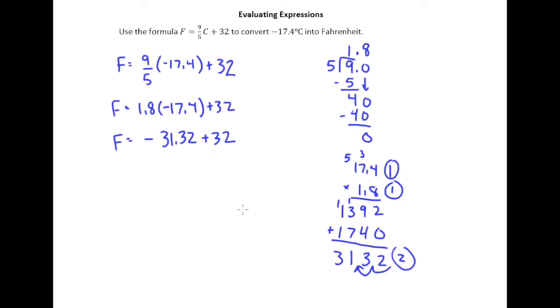And so now we know we just need to subtract these numbers, or these absolute values. So 32 minus 31.32. Looks like I better add a couple of 0s after the decimal point in 32.